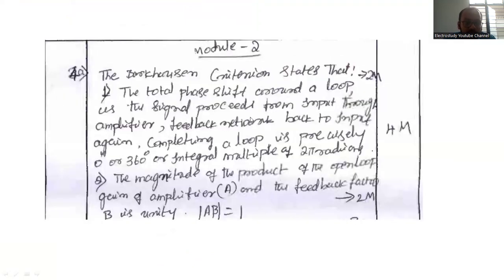It is very important. Mention how the oscillator works according to Barkhausen criteria regarding the total phase shift around the loop in the signal proceed from the input through the amplifier feedback network back to the input. Again, completing a loop is either 0 degree or 360 degree.